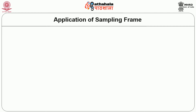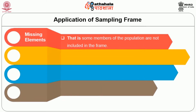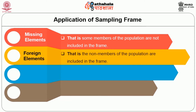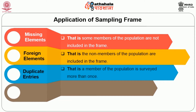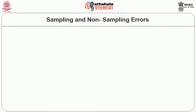As far as the application of sampling frame is concerned, there are a few practical difficulties: missing elements, where some members of the population are not included in the frame; foreign elements, where non-members of the population are included in the frame; duplicate entries, where a member of the population is surveyed more than once; and groups or clusters, where the frame lists clusters instead of individuals.